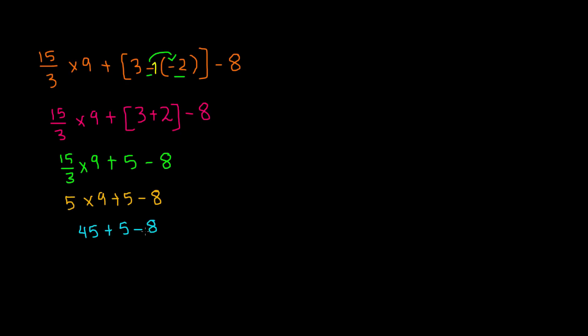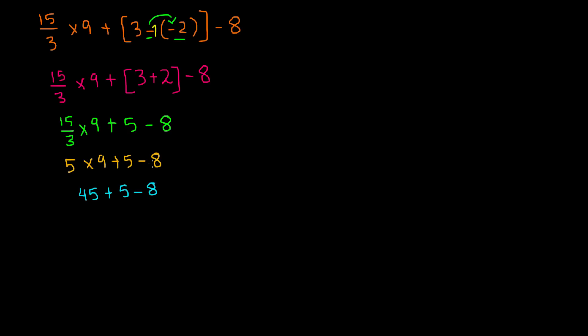Next we have addition and subtraction. Addition comes first from left to right, so we're going to add. We have 45 plus 5, which gives us 50, minus 8. And 50 minus 8 is 42, so our answer is 42. Remember that 42 is the same as positive 42, but we don't need to add the positive sign because if a number doesn't have a sign in front of it, it always means it's positive. This is the final answer to our entire expression.